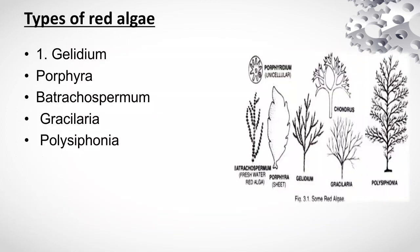Types of red algae — you can observe these in the diagram as well. Examples include Polysiphonia, Gelidium, and others.